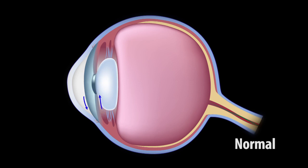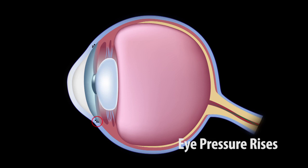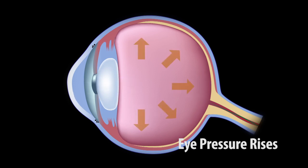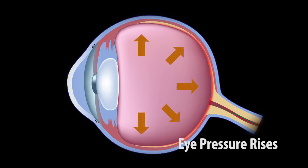The biggest risk factor for glaucoma is aging. As we get older, our drainage channels in our eyes can decompensate, and slowly the pressure can raise. But there are certain risk factors that make people at higher risk — for example, patients with a family history, patients with African descent, patients who are diabetic, or patients who have had multiple surgeries.